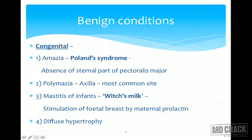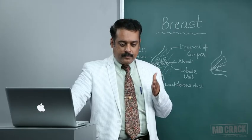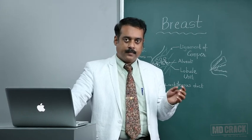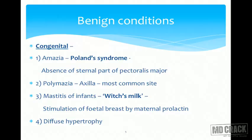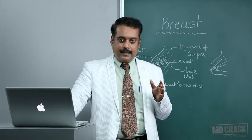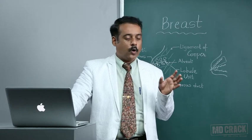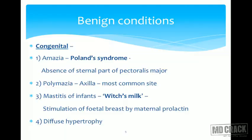We now move on to benign conditions — both congenital and acquired. Starting with congenital conditions, which vary in terms of number, structure, internal changes, and other abnormalities. First is amasia — the absence of the entire breast altogether from the chest wall. This can be unilateral or, very rarely, bilateral. When bilateral, it is called Poland's syndrome, which means amasia plus absence of the sternal portion of the pectoralis major muscle.